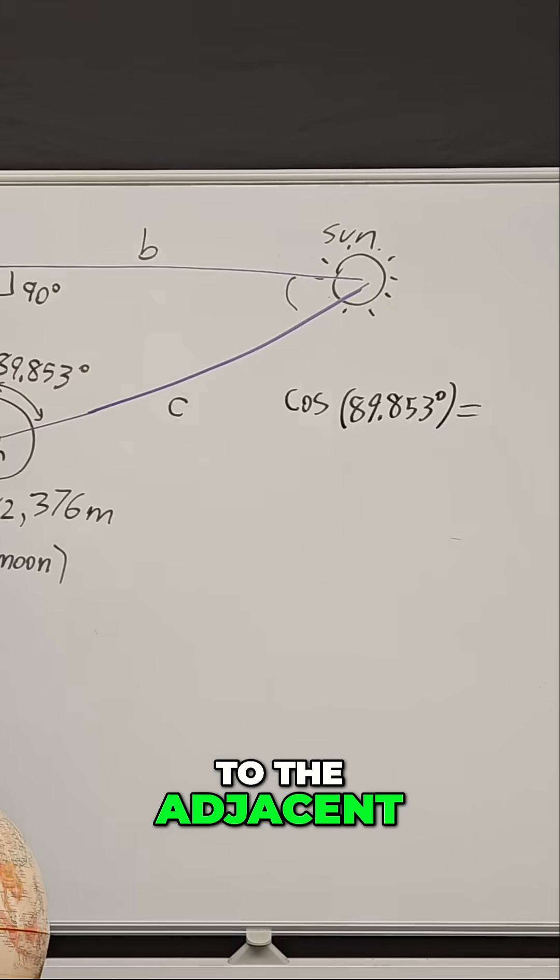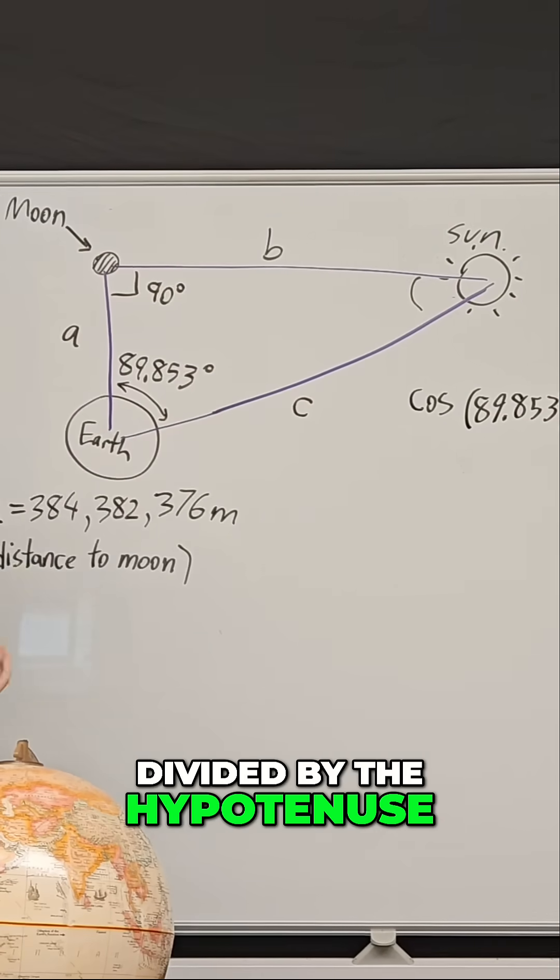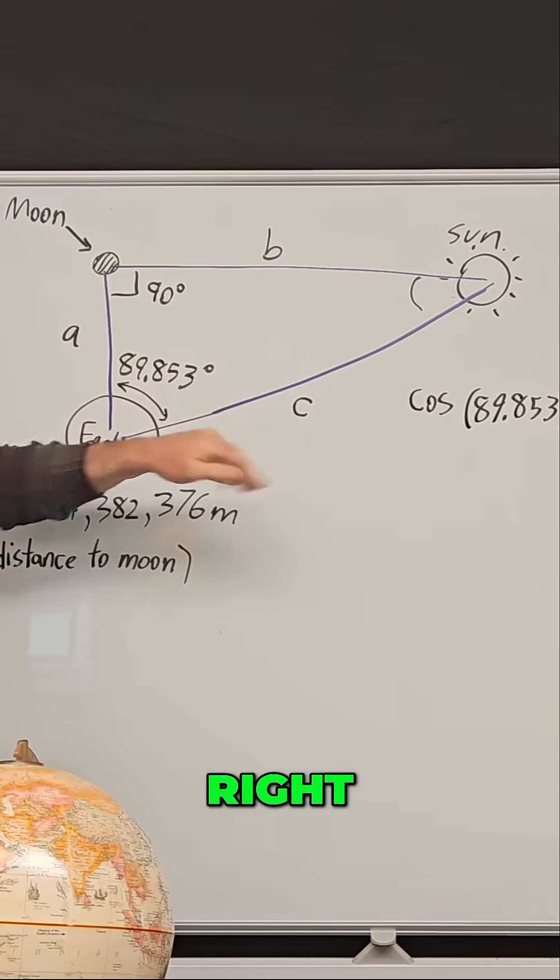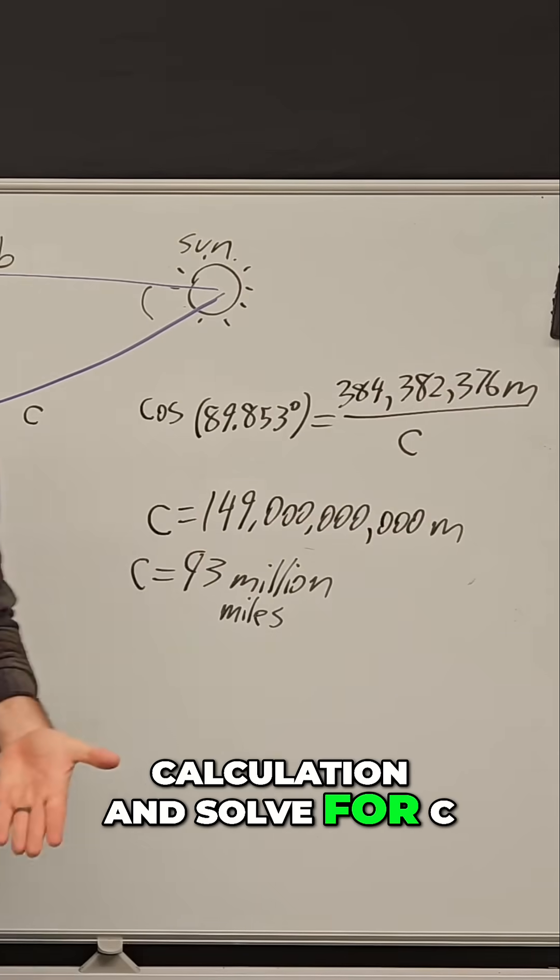has to be equal to the adjacent side divided by the hypotenuse. So it has to be equal to A over C. If you do that calculation and solve for C,